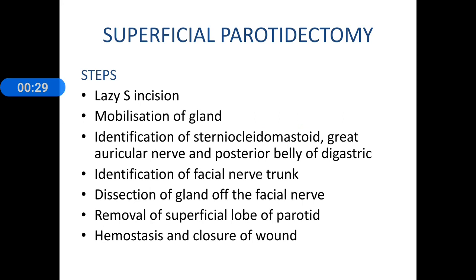For superficial parotidectomy — as mentioned earlier, for the diagnosis of tumors like parotid tumor and carcinoma, today it is the preferred procedure. The incision is a lazy S-shaped type. Once you place the incision, you raise the flaps and see the gland. The gland is mobilized; you identify the sternocleidomastoid muscle, the great auricular nerve, and the posterior belly of the digastric. Then you identify the facial nerve trunk and trace it into the parotid gland, dissecting the gland away from the facial nerve carefully. The superficial lobe of the parotid gland is removed, hemostasis is ensured, and the wound is closed.